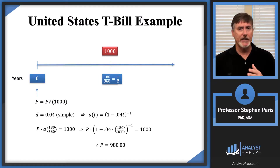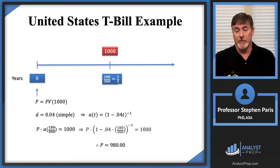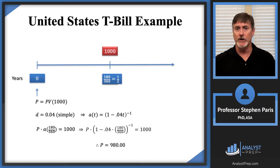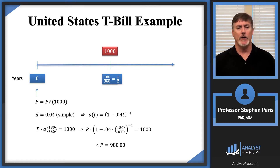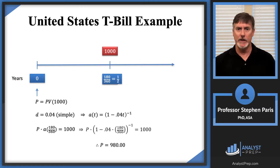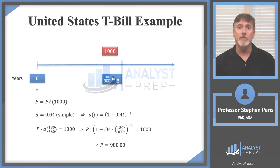So once again, as with Canadian T-Bills, there are four unknown quantities: the price, the redemption value, the quoted rate, and the time to maturity. You'll be given three of those four and asked to find the remaining one. With US Treasury bills, just remember that the quoted rate is a simple discount rate based on a 360-day year. I'll see you in the next video.